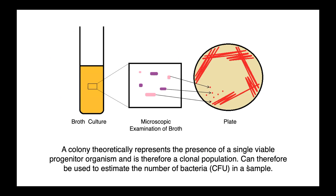Because a colony theoretically represents the presence of a single viable progenitor organism and is therefore a clonal population — all genetically homogenous, having originated by binary fission — we can use the presence of colonies on a plate to estimate the number, or concentration, of colony forming units in an original sample.